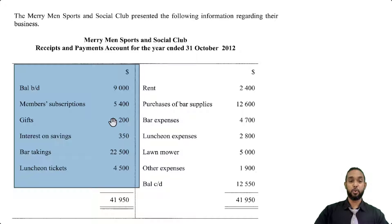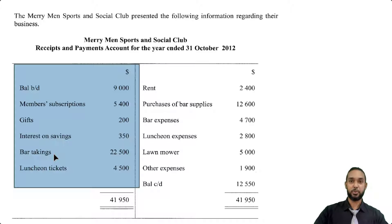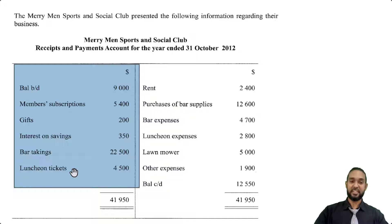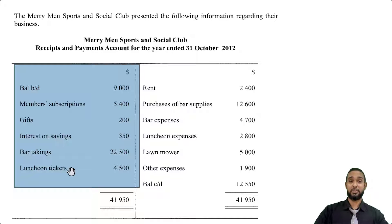We have gifts, also known as donations. Interest on savings — money coming in from the savings account. Bar takings — takings is another word for sales. These clubs often had bars or cafeterias and would sell things like drinks and food to their members. We also have luncheon tickets. These non-profit organizations often had to engage in fundraising activities — luncheons, barbecues, social days, family days — and you'd have to figure out the net revenue from those things. Those are all the inflows or receipts on the debit side of the receipts and payments account.